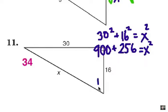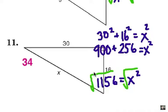Now we take the square root of each side. And the answer is exactly 34. The square root of 1156 is 34.